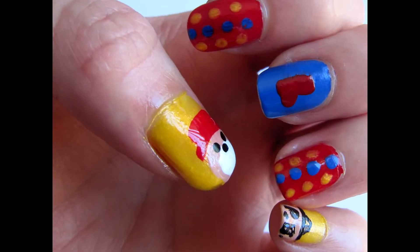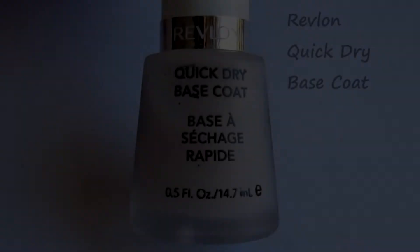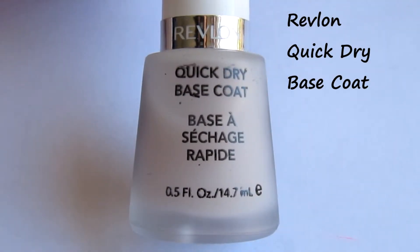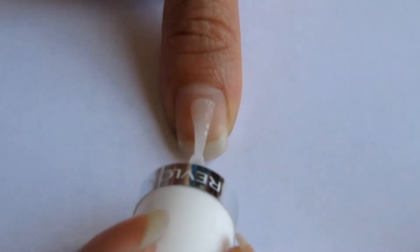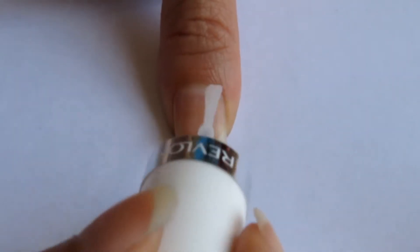The first design is Paddington himself on your thumb. I'm going to begin with the Revlon quick dry base coat. As always I'll be painting a coat of this on to protect my nails.